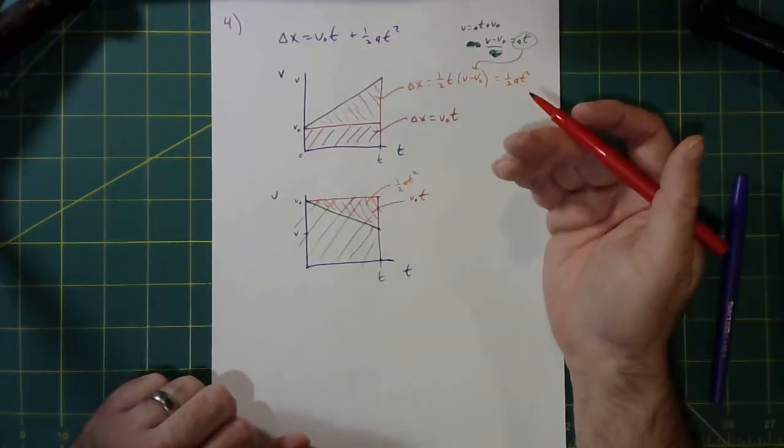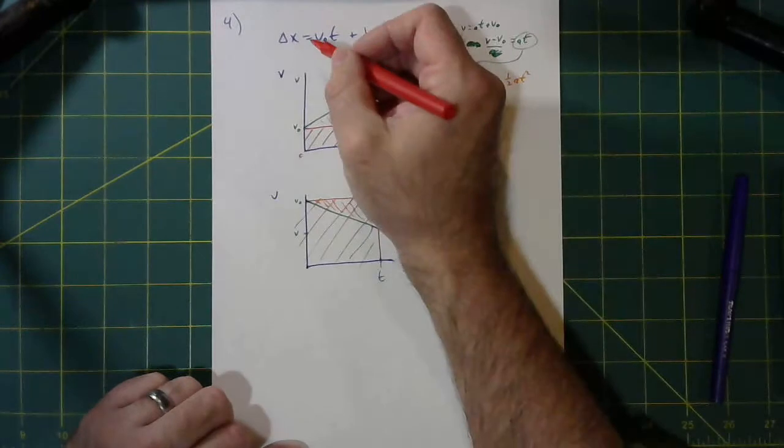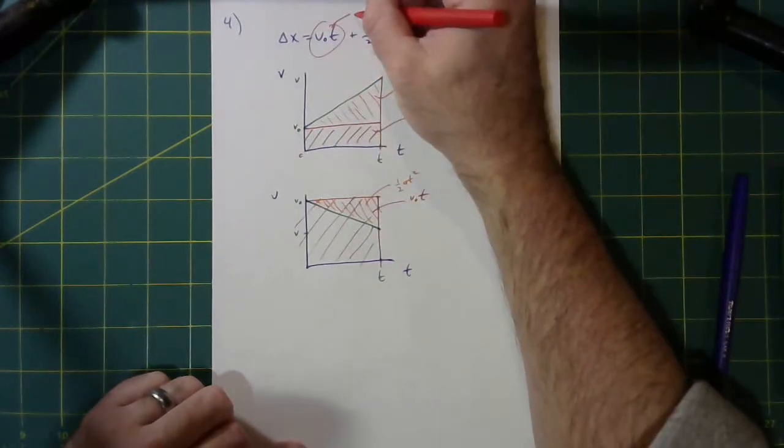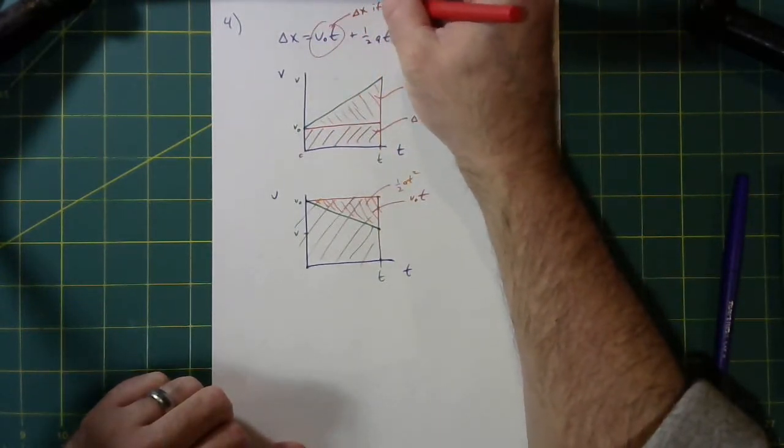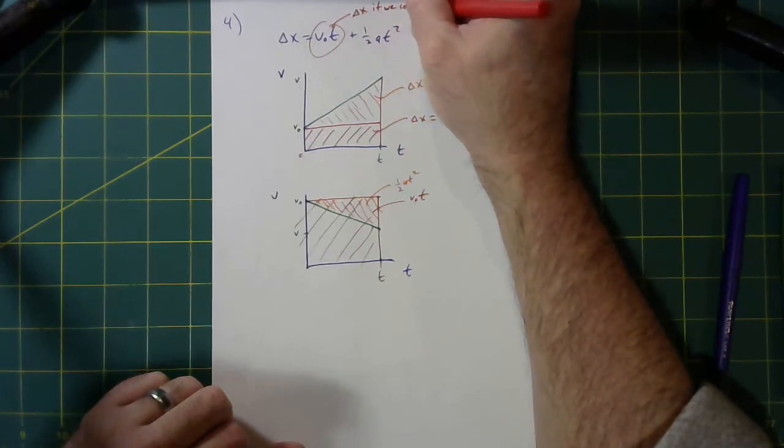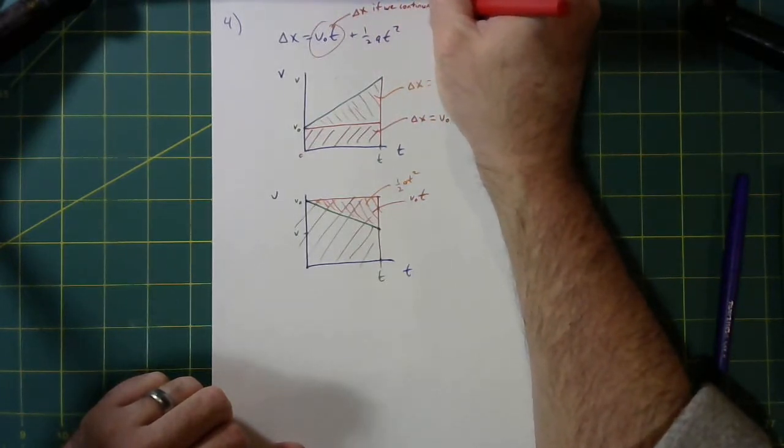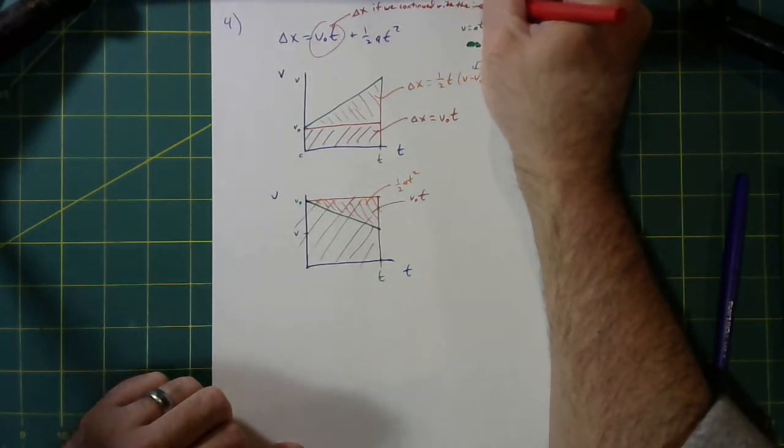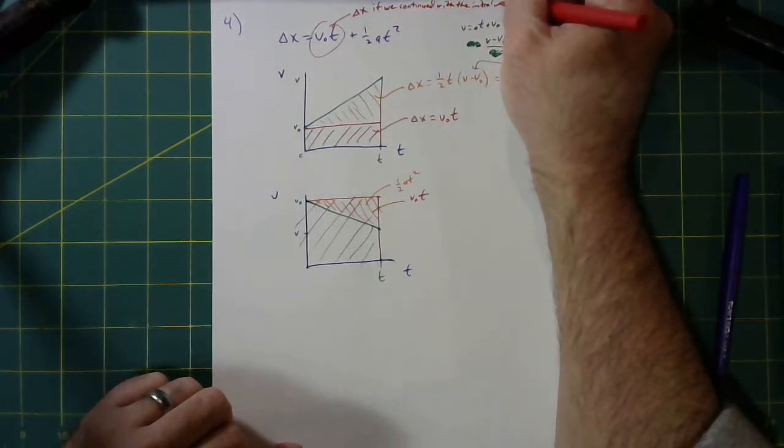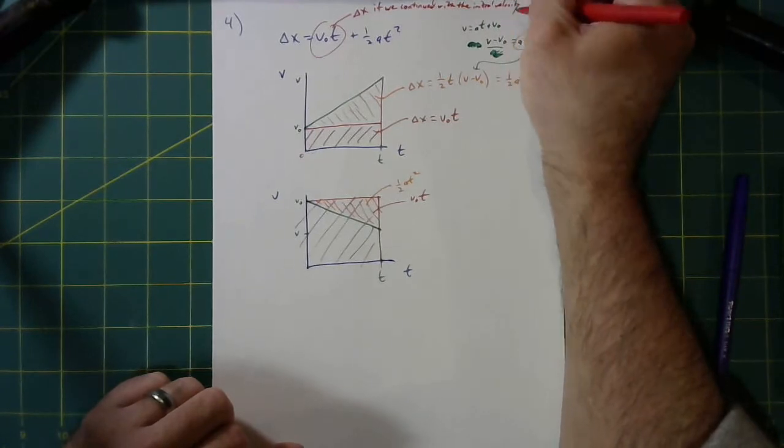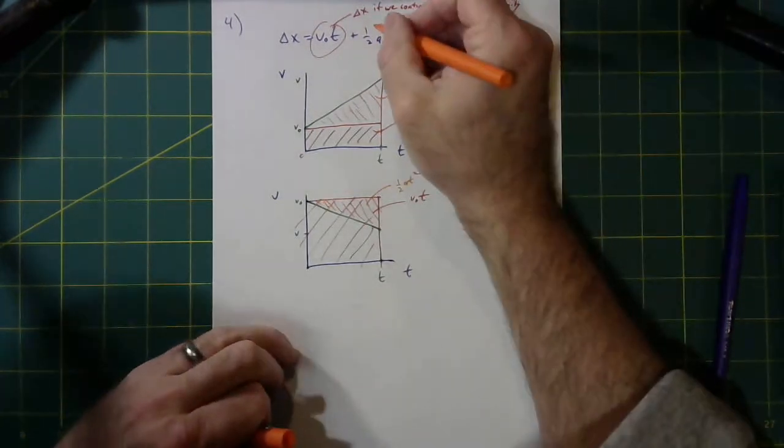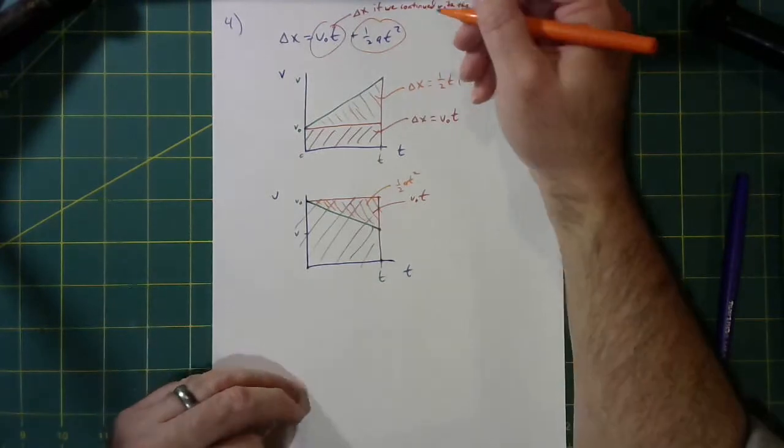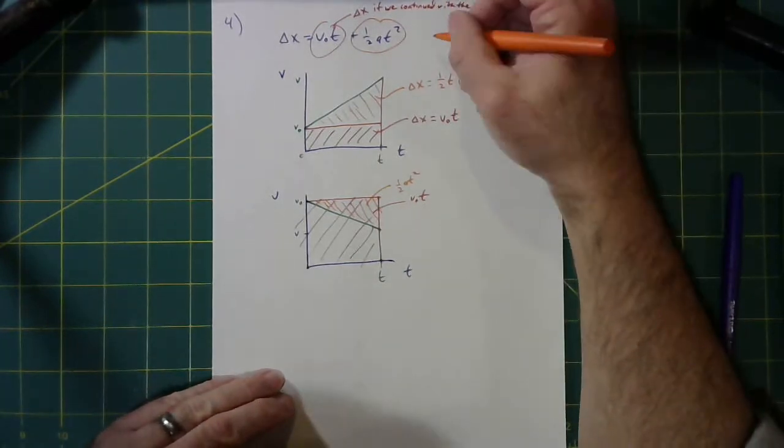That's the meanings of the two terms, really. You say, this first term is the displacement if we continued with the initial velocity that whole time. So this term is like the modification to the displacement because we're accelerating.